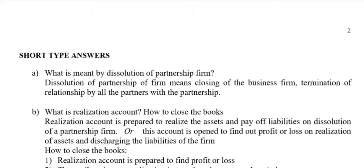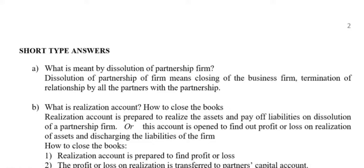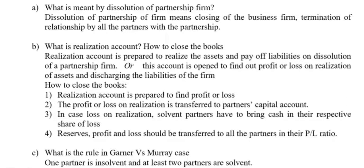How to close the books? First step: Realization Account should be prepared to find the profit or loss. Second: the profit or loss on realization account has to be transferred to partners' capital account. Third: in case of loss on realization, solvent partners have to bring cash in their respective share of loss. Fourth: reserves and profit and loss should be transferred to all partners in their profit and loss ratio.